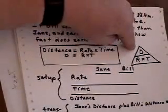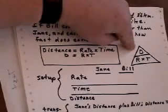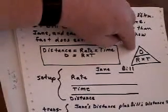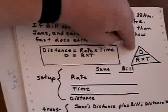Over here, I have another way of writing this, D equals RT, that I learned. It's sort of a magic triangle. If you put your finger over the letter you're trying to solve for, it gives you the answer.